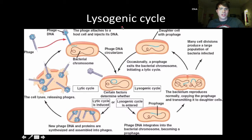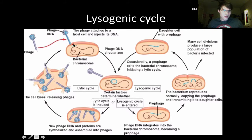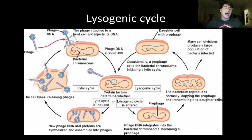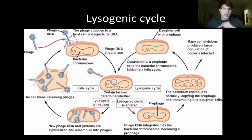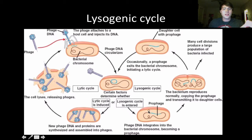The other cycle is the lysogenic cycle — 'genic' meaning it has the potential to become lytic. The same initial steps occur: the phage binds to lipopolysaccharides or outer structures, causing a conformational change, and the phage DNA is inserted into the bacterial cell. But instead of destroying the host, the viral DNA circularizes and integrates itself into the bacterial host chromosome, existing as a prophage. Certain factors determine whether it goes lytic or lysogenic.